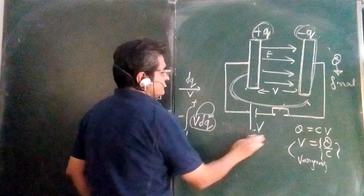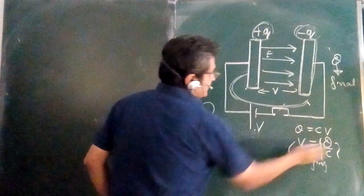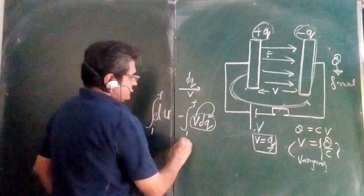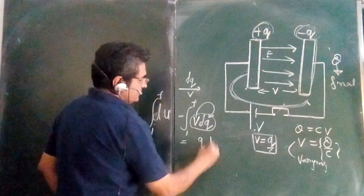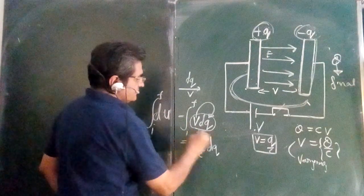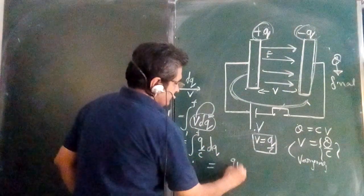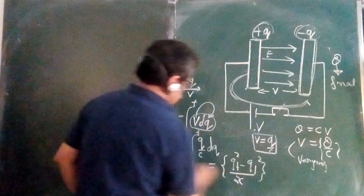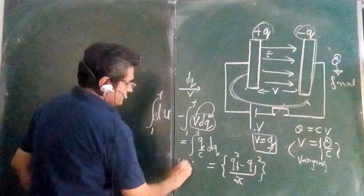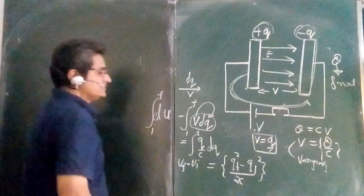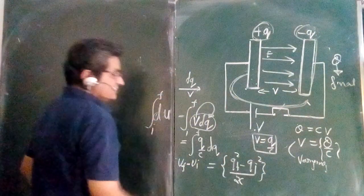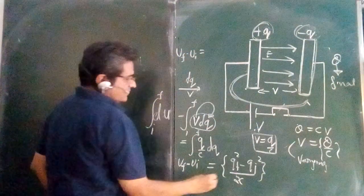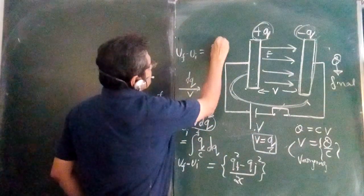Since V is variable, we write V as Q upon C. So the integral becomes Q upon C times dq, from initial to final. This gives us Q final squared minus Q initial squared, all upon 2C, as the change in energy of the capacitor — that is U final minus U initial. Since the initial charge on the capacitor is zero, U final minus U initial equals Q squared upon 2C.